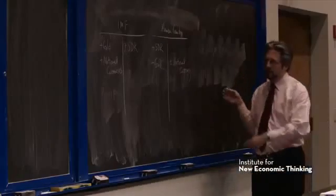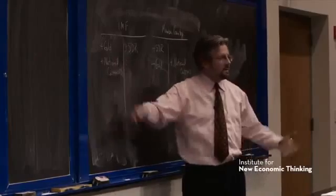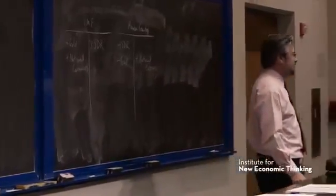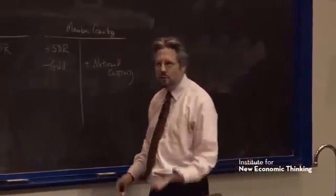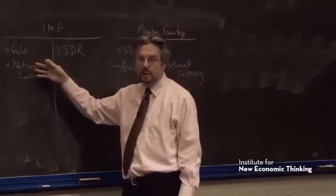So these SDRs are an asset of the member country, which it pays for by sending gold here and by creating national currencies here. And all of the different countries do this. And so, the IMF winds up with all different kinds of national currencies here. Some of them are important national currencies and some of them are not. The important ones are the majors, as we saw last time, in particular the dollar.